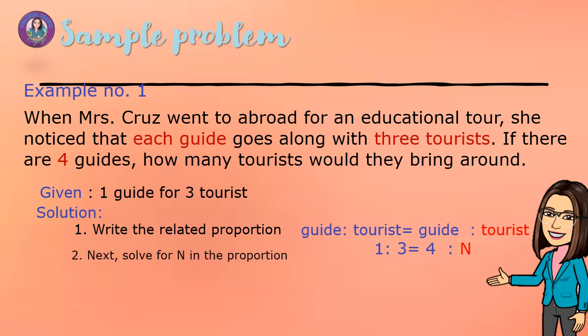Next, we will solve for N in the proportion. We need to know the number of tourists. That is 1 times N equals 4 times 3. We have N equals 12. Therefore, our answer is 12 tourists.